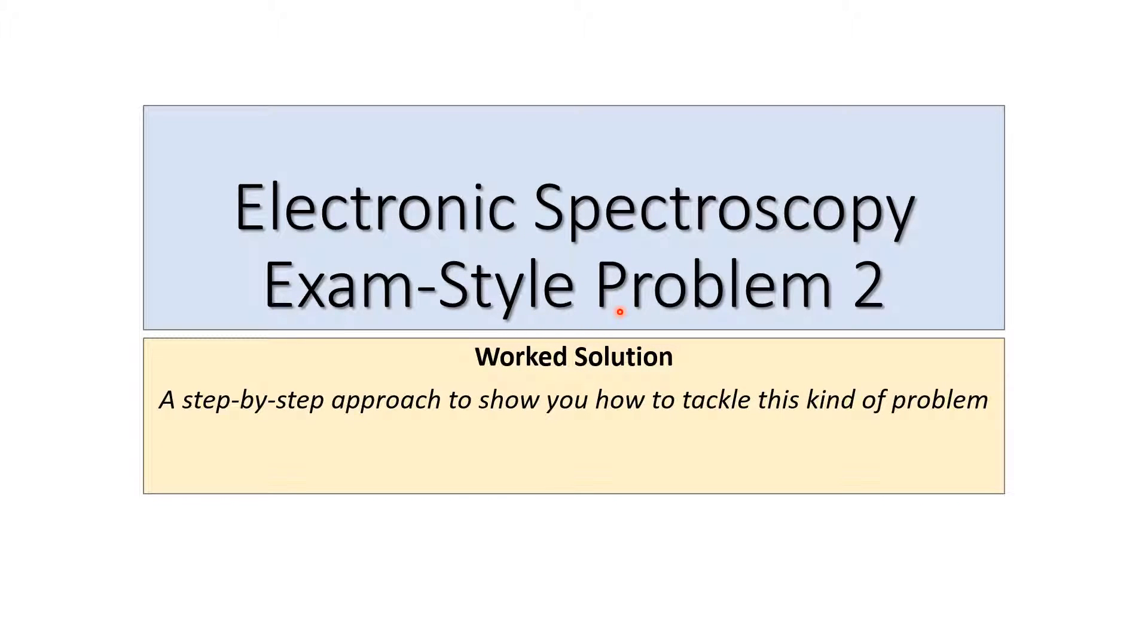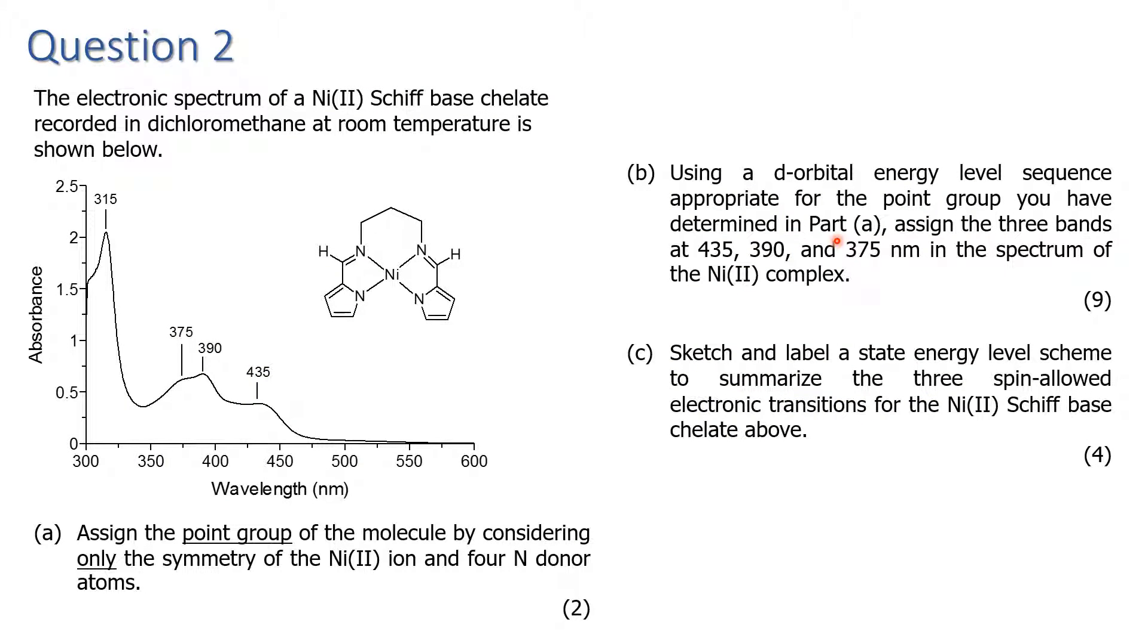Morning class, today we're going to look at a solution to problem 2 in our electronic spectroscopy tutorials. The question says we need to analyze the electronic spectrum of this nickel 2 chelate. The spectrum, which is a plot of absorbance against wavelength, shows three distinct bands above 350 nanometers and then one intense band at 350 nanometers. We're going to be ignoring the symmetry of the chelating ligand to determine the point group of this system.